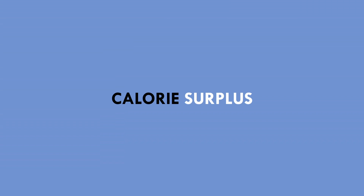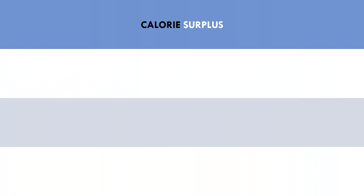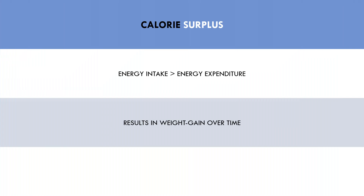The next form of energy balance we have is a calorie surplus. This is the opposite of a calorie deficit, which means that we intake more calories than we expend. By definition, this will result in weight gain over time. Once again, whether this weight is muscle, fat, or other tissue will be dependent on other variables, but it should be understood that a calorie surplus will result in long-term weight gain. A calorie surplus can be achieved via a combination of lowering energy expenditure or eating more calories, but eating more calories will be directly more effective.